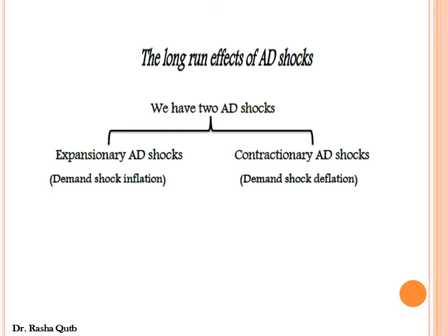These two types of aggregate demand shocks mean that the aggregate demand curve will shift either rightward — which we call an expansionary shock or positive aggregate demand shock — or leftward for a contractionary shock.